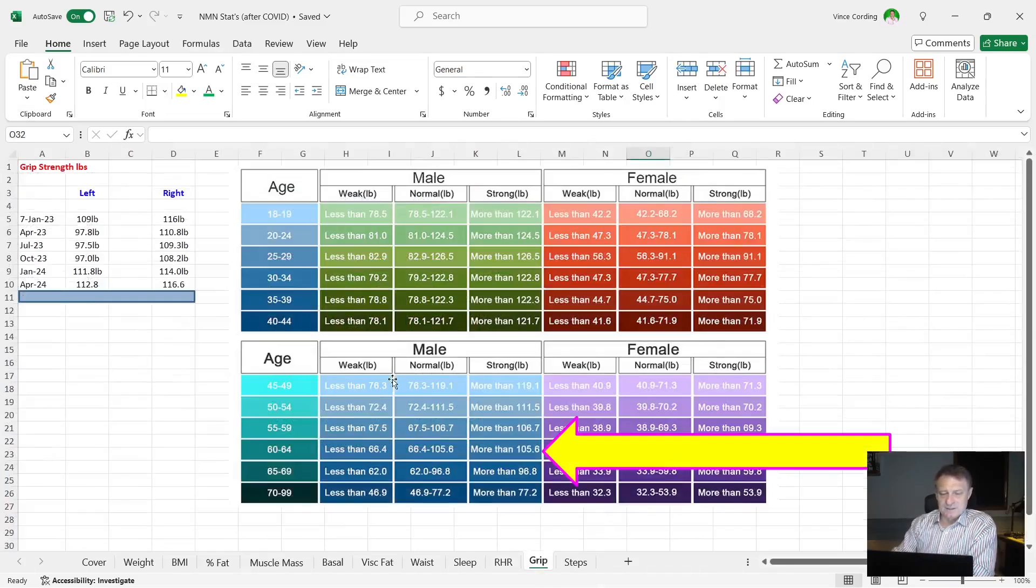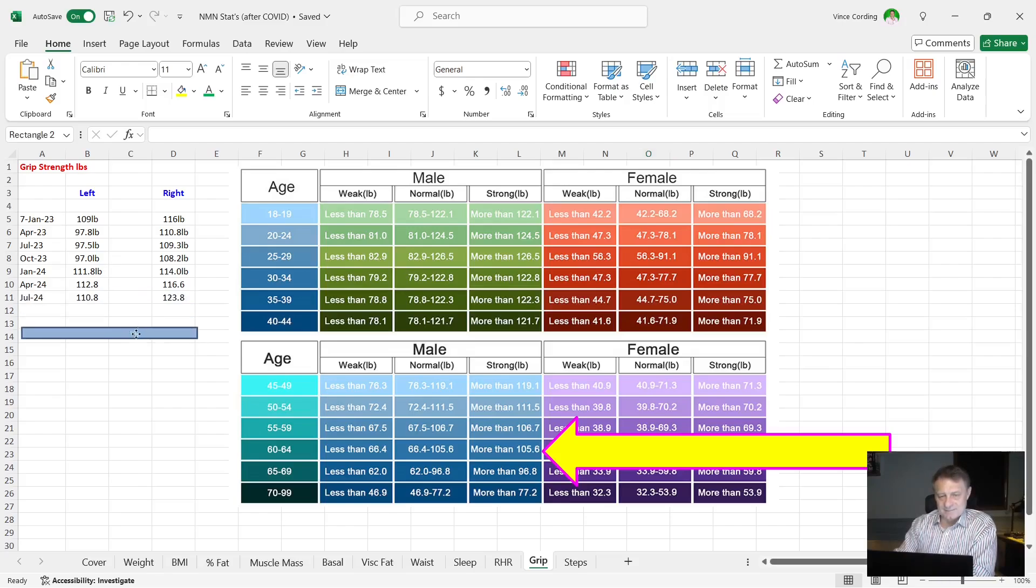Then we've got my grip strength. You can see here last April it was 112.8 pounds in my left hand and 116.6 for my right hand. This time it's 110.8 for my left hand and 123.8 for my right hand. A man between the age of 60 and 64, if he gets more than 105, they class him as strong.